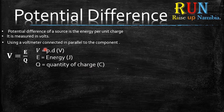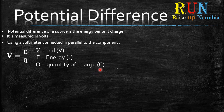V stands for potential difference, E stands for energy, and Q stands for quantity of charge. The potential difference is measured in volts, energy in joules, and the quantity of charge is measured in coulombs.